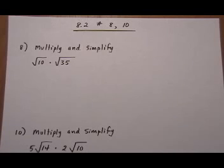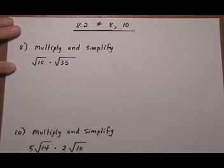8.2, number 8 and 10. Here we're going to continue using the same properties from the previous video, but we're going to do trickier problems now. So, number 8, we want to multiply and simplify root 10 times root 35.